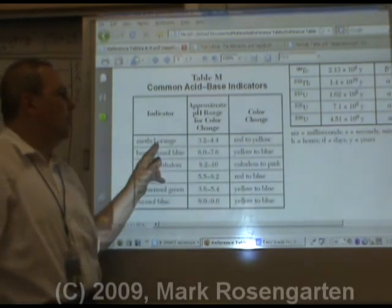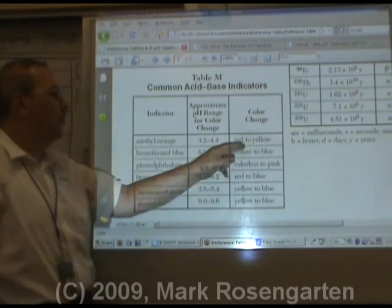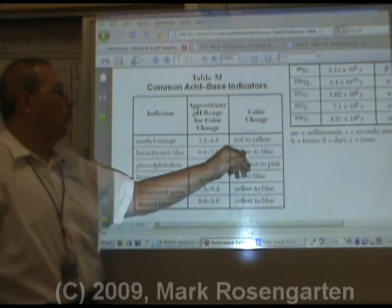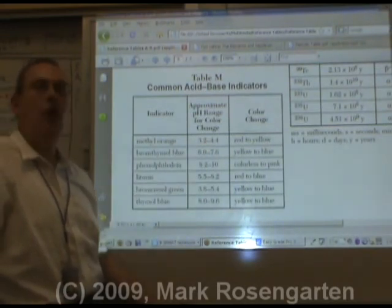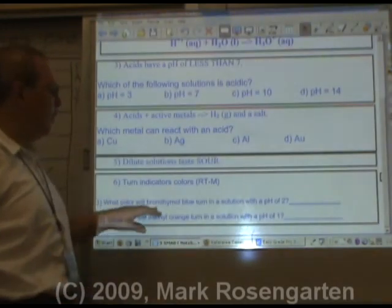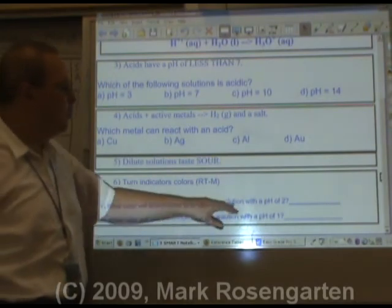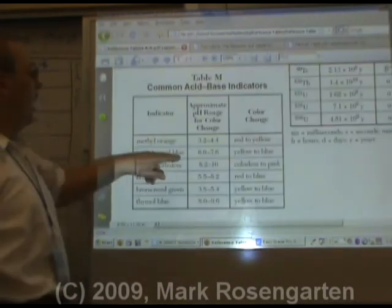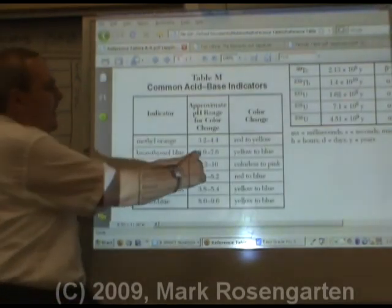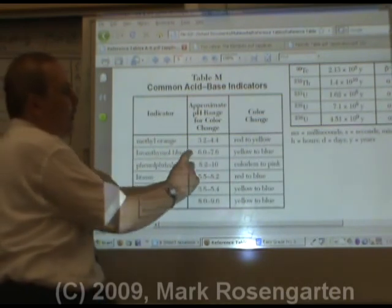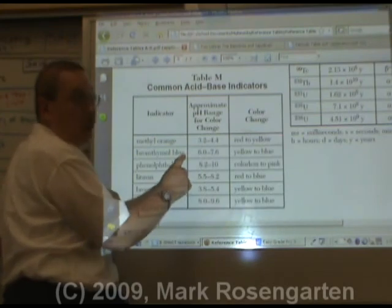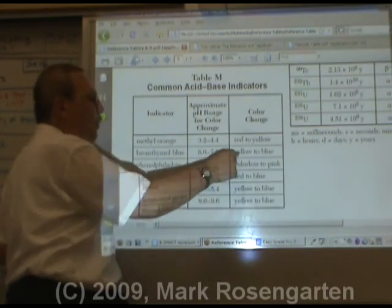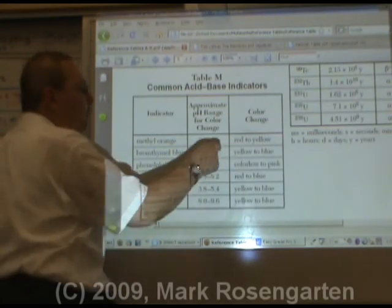For example, less than 3.2, methyl orange is red. Higher than 4.4, it's yellow. In between these two values, it's orange. What color will bromothymol blue be in a solution with a pH of 2? A pH of 2 is less than the lower range of bromothymol blue's color change. Below 6.0, 2 is below 6.0. Bromothymol blue is yellow, therefore yellow.